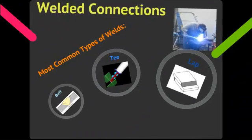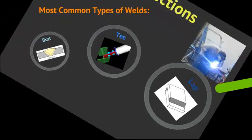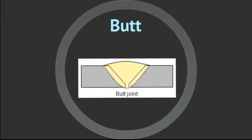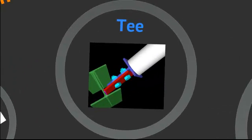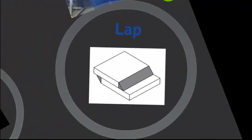The most common types of welds include the butt weld, where two pieces are butted together; the T-weld, where a piece is placed perpendicular to another piece; and the lap weld, where two pieces overlap and are welded at the connection.